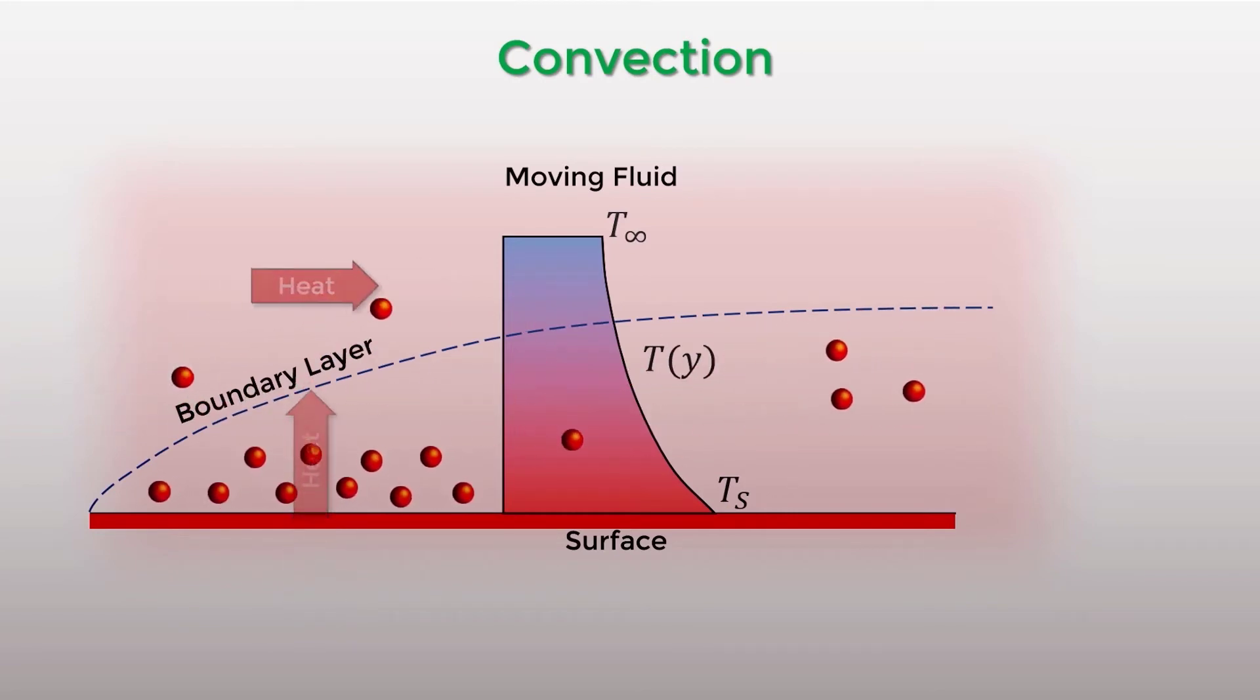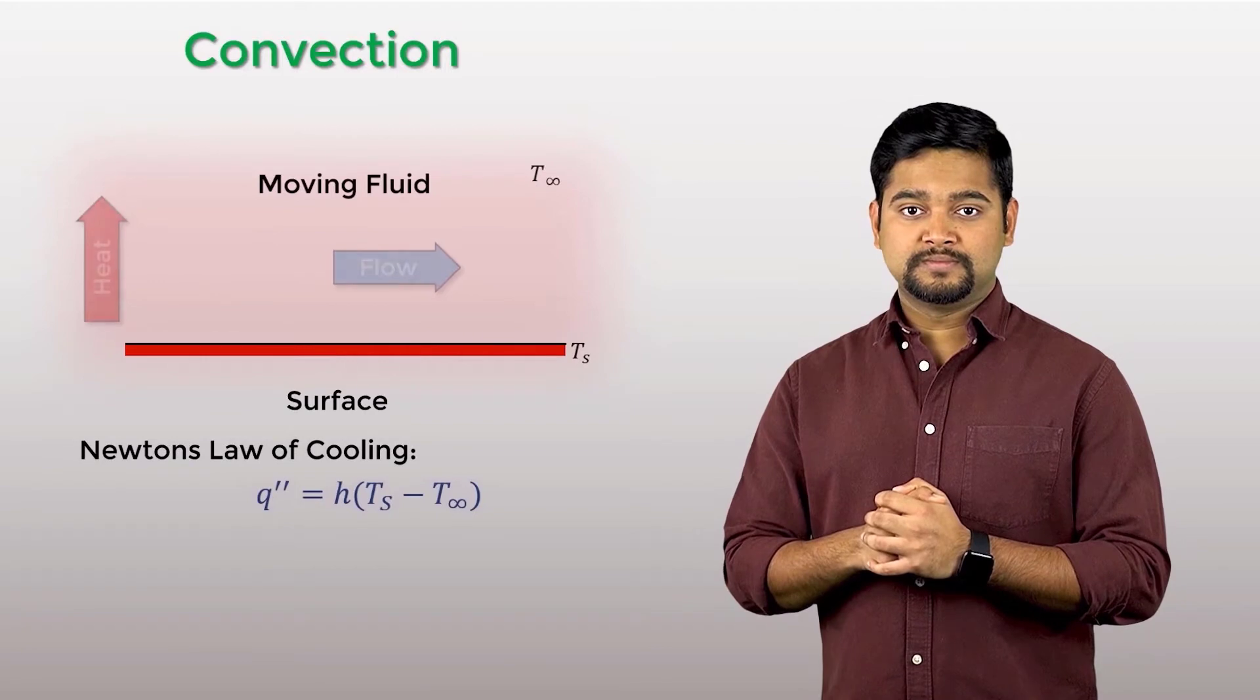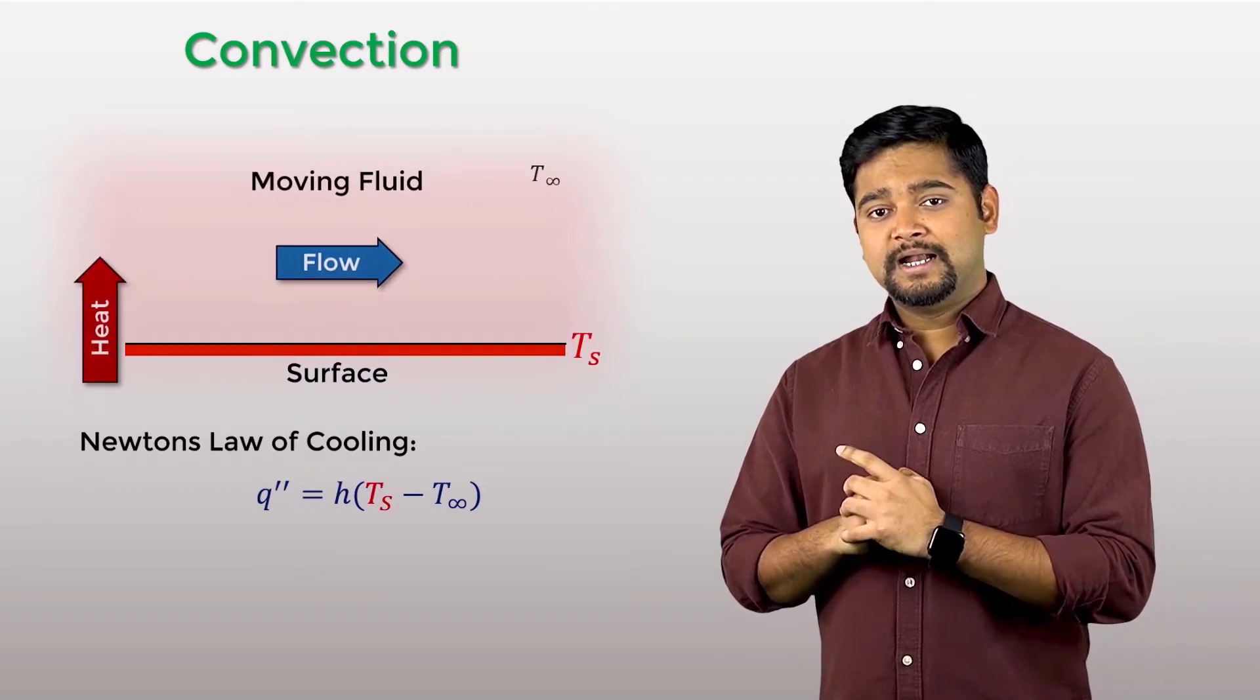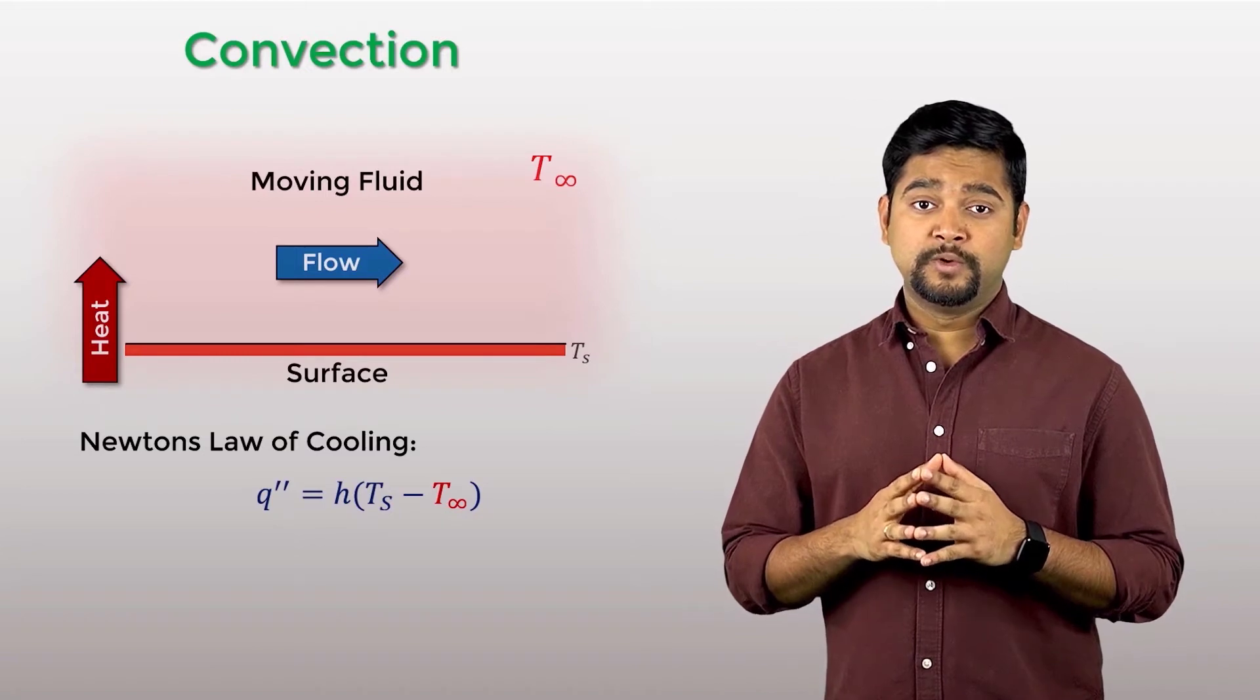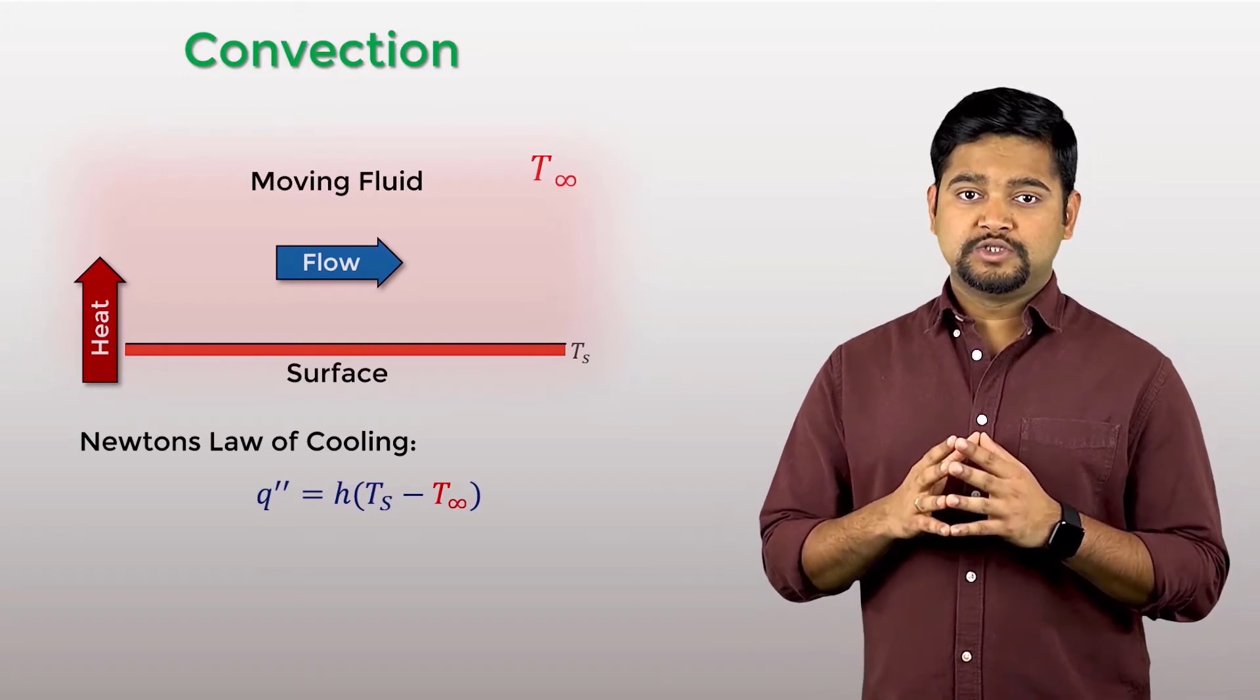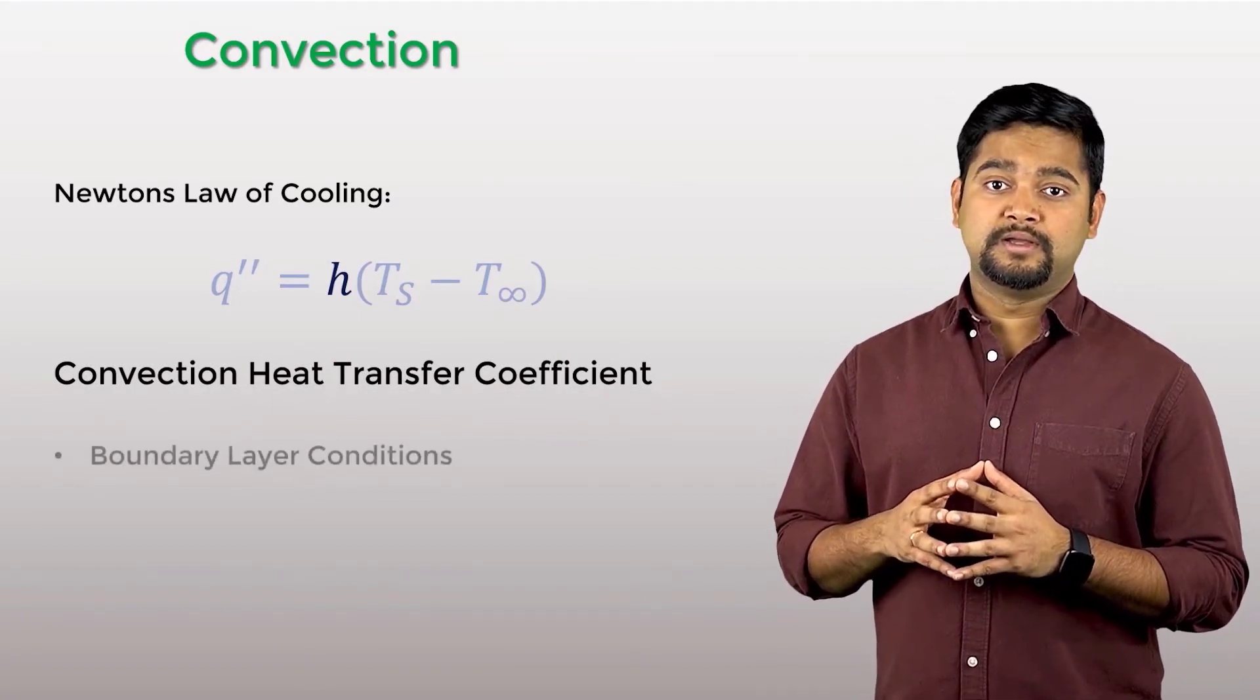The rate of convection heat transfer process is given by Newton's law of cooling, as shown here. Here, Ts is the temperature of the solid surface and T infinity represents the temperature of the fluid flowing over this surface. In this equation, H is the convection heat transfer coefficient. And it depends on the conditions in the boundary layer.